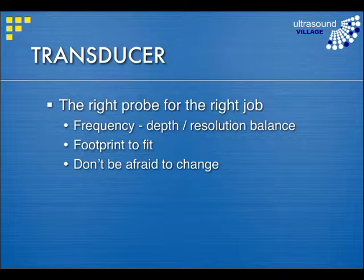The first thing you need to do is decide what transducer you're going to use for the job at hand. As we've mentioned repeatedly, this is often a balance when choosing the appropriate frequency because you've got a trade-off between depth, penetration, and the resolution you can achieve at a given frequency. In addition, you choose the shape of the transducer with the appropriate size footprint. If you're trying to examine between ribs, choose the probe with the small footprint. Don't be afraid to change — if you're using a curvilinear abdominal low-frequency probe but see something more superficial, change to the high-frequency linear probe for that section.